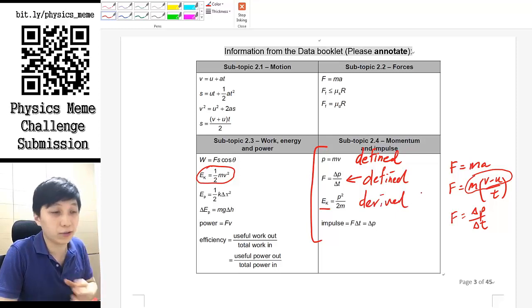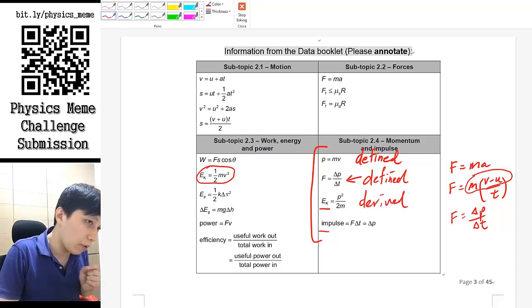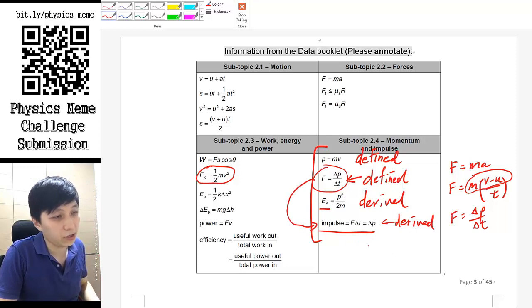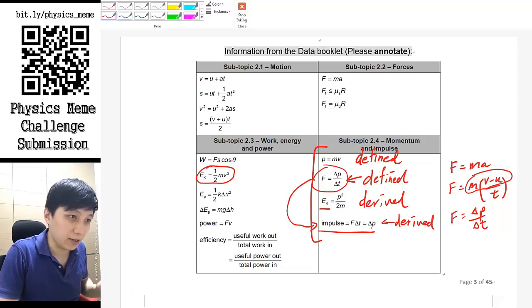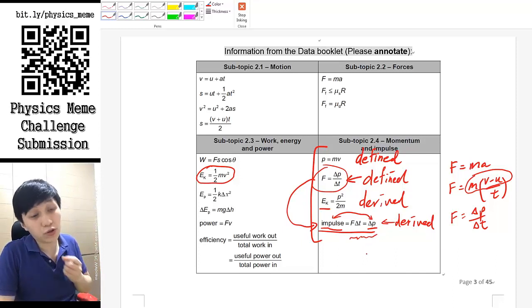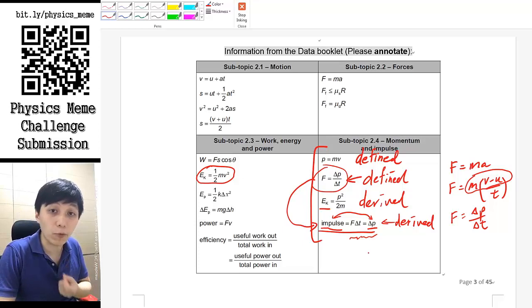For number four, this obviously is something you can do once you got the second equation, so I would say this is also derived as well. That is how you can define the change of momentum as impulse. This of course is definition, but in terms of the equation here, I would say is being derived. There's also one more equation that you will use very often, and that is the conservation of momentum.